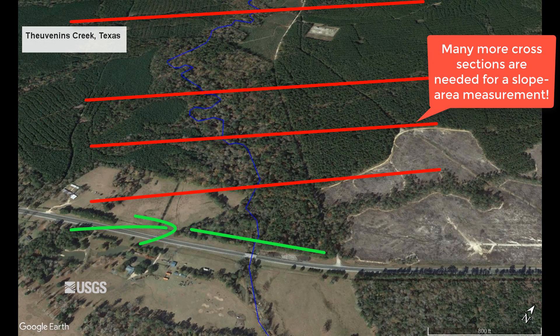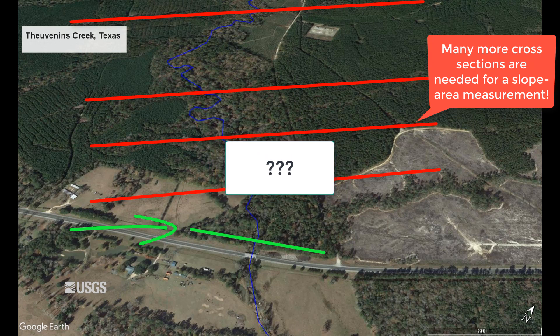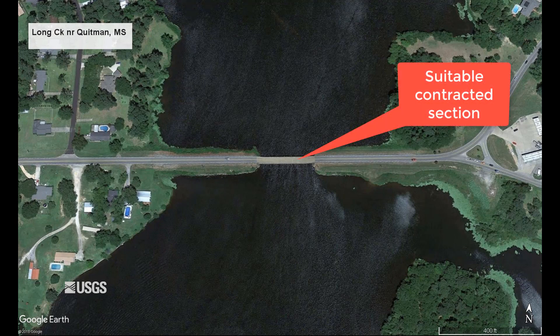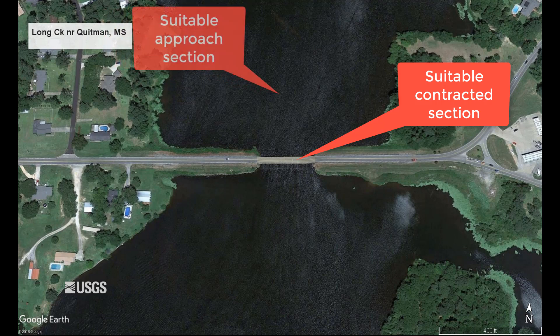So let's talk about what you should be looking for when you go out to a site. To ensure that you have all the necessary information to compute a contracted opening indirect measurement, you will need the following components: one, a suitable contracted section; two, a suitable approach section; and three, good quality high water marks.